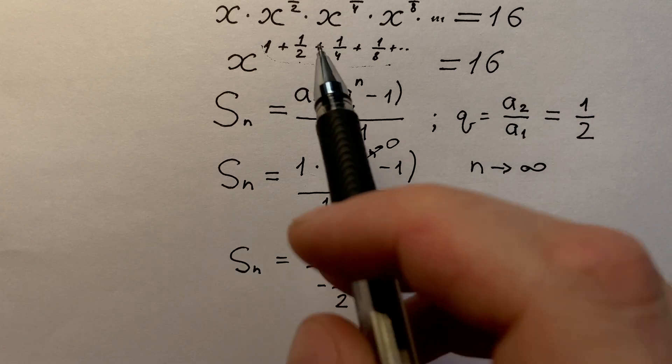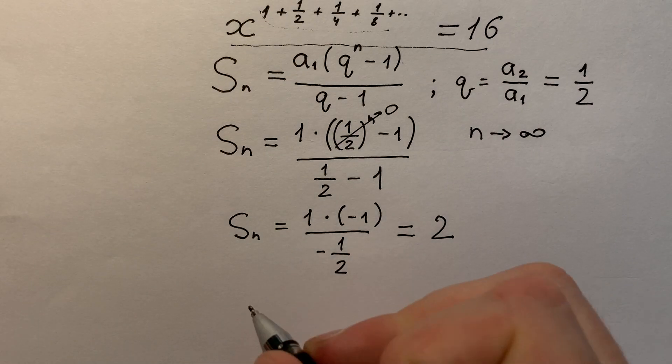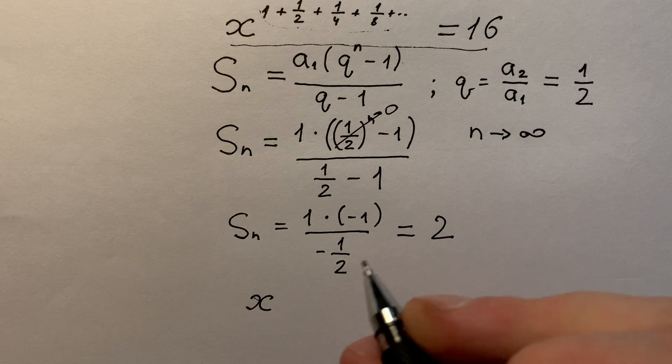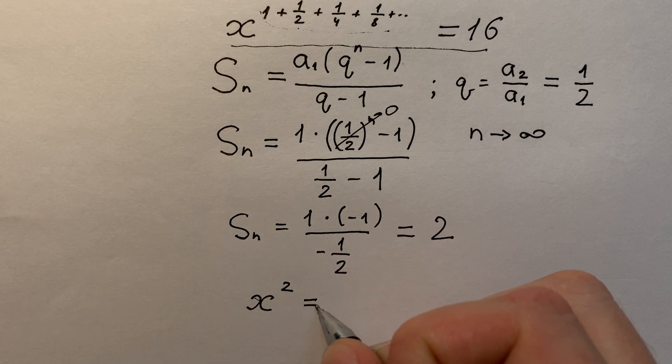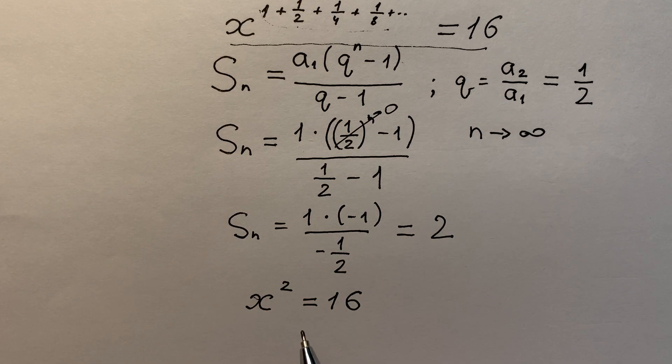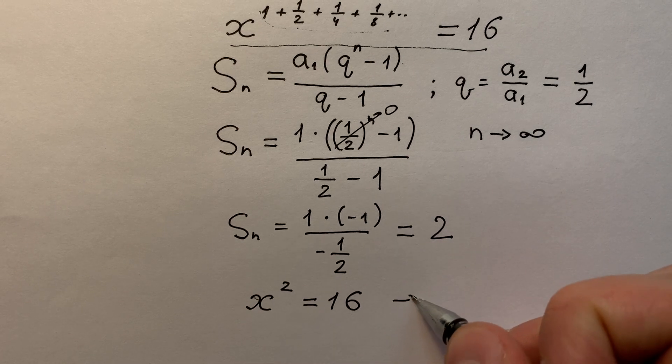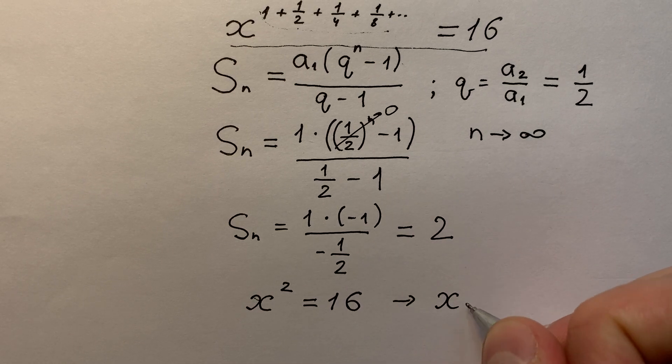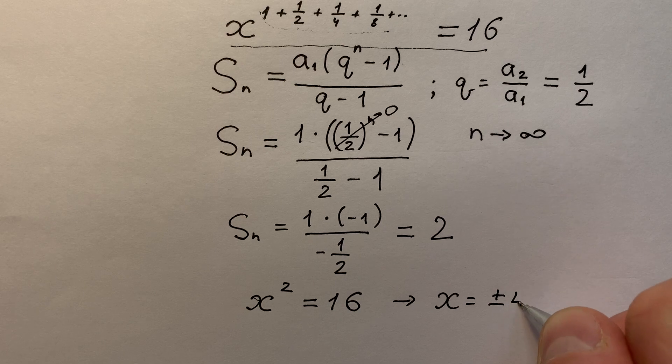So we can write this equation like x to the power of sum equals to 2, and it equals to 16. Very nice. And there we get that x equals to plus or minus 4.